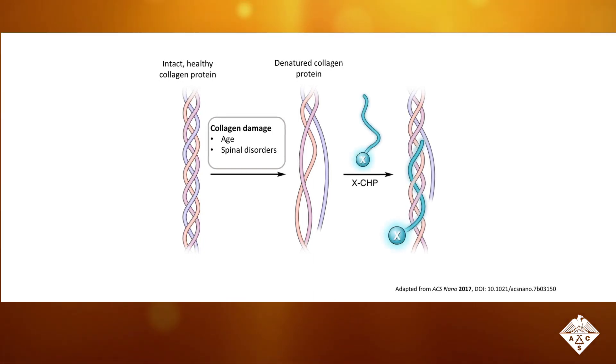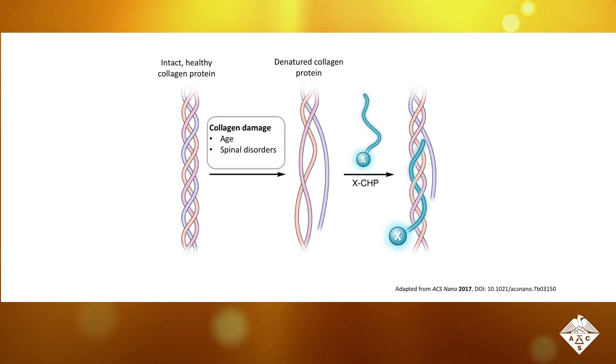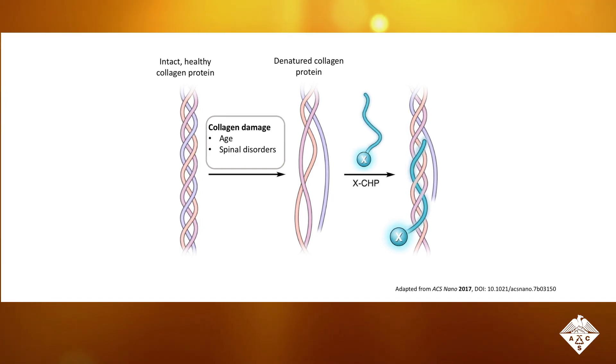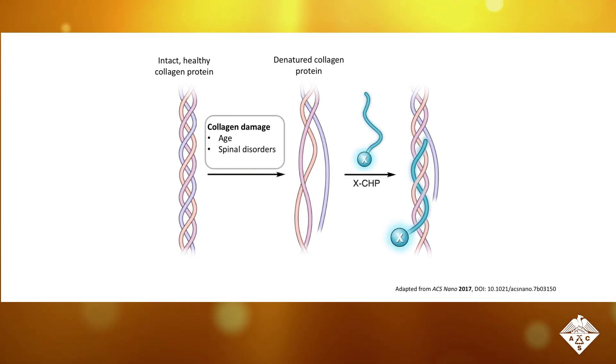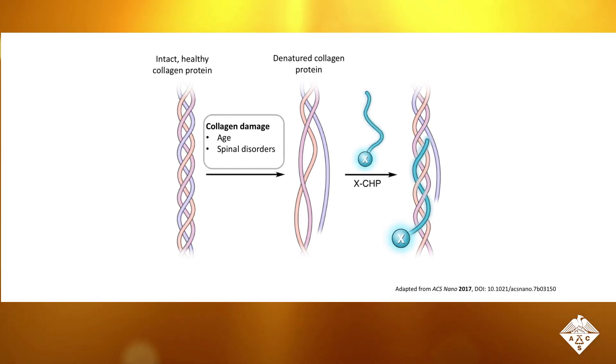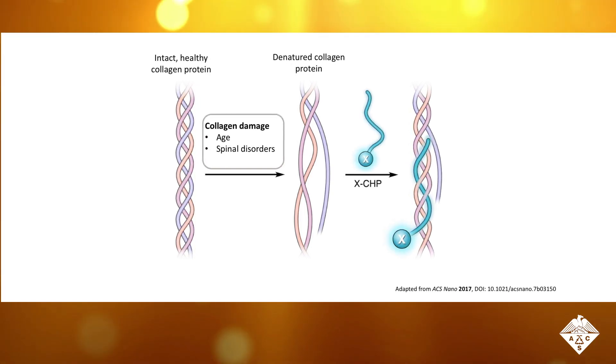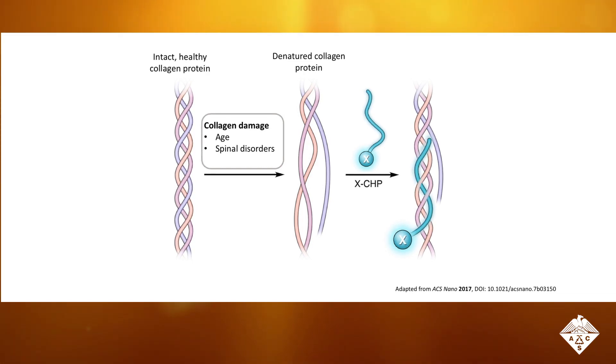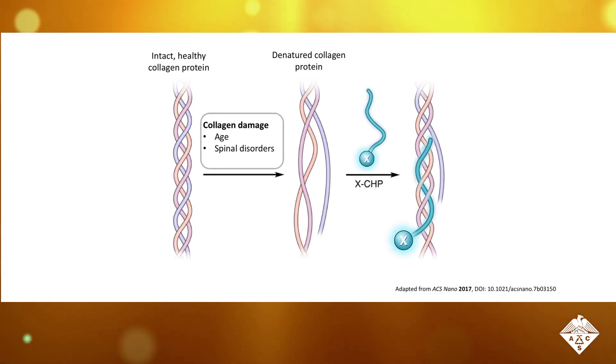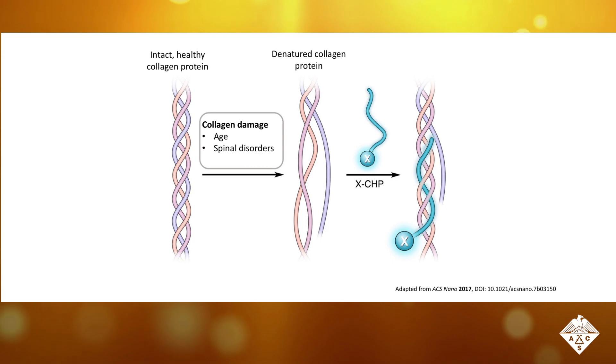Previously, to observe the loss of the protein structure, Yang Li and colleagues developed a probe based on a collagen hybridizing peptide, or CHP, that specifically binds unwound collagen molecules. They labeled the CHP probe with a fluorescent tag, shown here as X, that allowed the team to visualize denatured collagen.